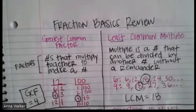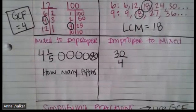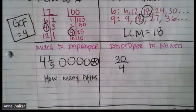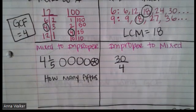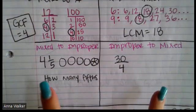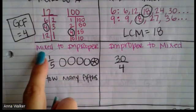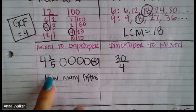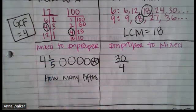The next thing we're going to talk about is converting between mixed and improper fractions — an important skill we'll use to help us simplify and set up problems. Go ahead and pause to set up these two sections. A mixed number is a number that has a whole number part and a fractional part — it's mixed. For example, four and one fifth has a whole number and a fractional part.